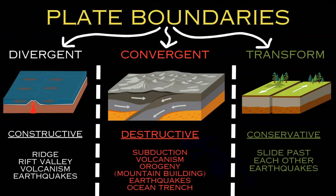Here we have our three plate boundaries: divergent, convergent, and transform boundaries. A boundary is where two or more plates meet. The boundaries differ in the direction of movement, and that movement is caused by the convection currents in the asthenosphere, a little bit lower in the upper mantle.